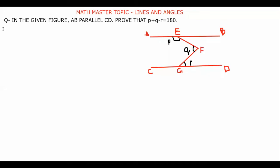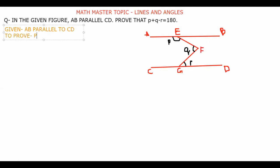As I have told you in earlier videos, in a proving question we first write what is given and what we have to prove, because that makes each step much easier. So: Given — AB is parallel to CD. To Prove — p + q - r = 180°.